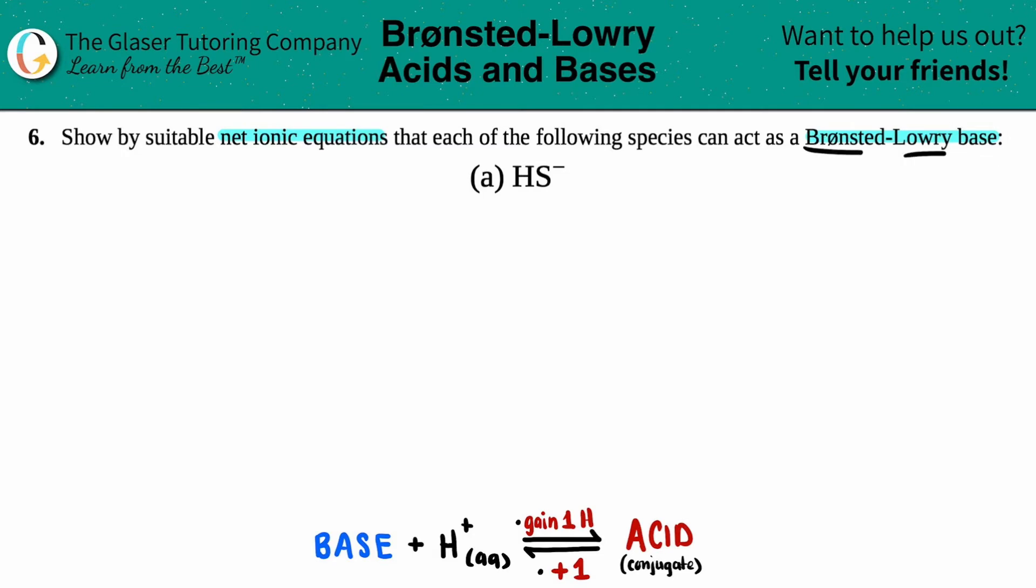Now, Brønsted and Lowry were two scientists that came up with the idea of what acids and bases do when they're in aqueous media. And bases will always accept or take, accept is the same word for take, they will always accept H plus ions.